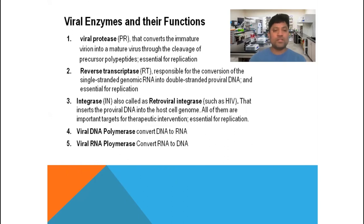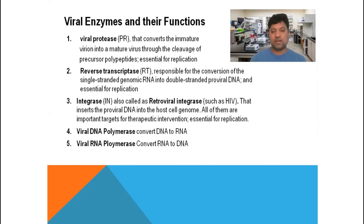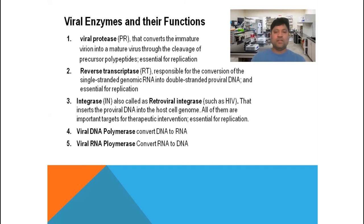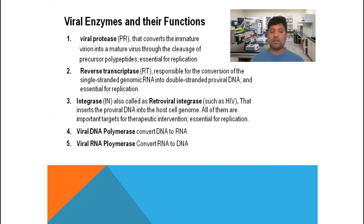The fourth enzyme is viral DNA polymerase, which converts DNA into RNA, and the fifth is viral RNA polymerase, which converts RNA into DNA. Viruses are of two main types: DNA viruses and RNA viruses. DNA viruses are able to produce messenger RNA, whereas RNA viruses are unable to produce messenger RNA.